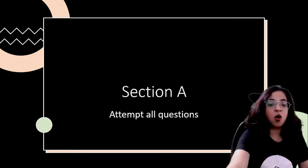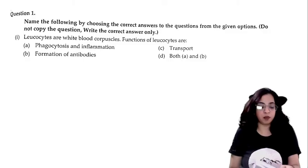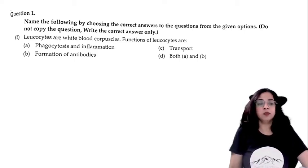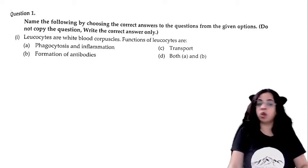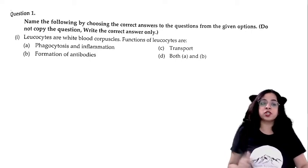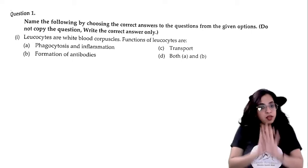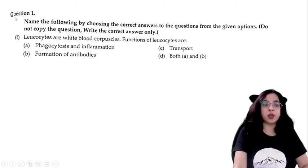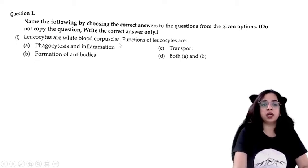Section A — all questions are compulsory. Name the following by choosing the correct answer from the given options. Do not copy the question; write the correct answers only. Just write the question number outside the margin — for example, question 1.1 — and then write the option inside the margin. That format is enough. Leukocytes are white blood corpuscles. The functions of leukocytes are: phagocytosis and inflammation, or formation of antibodies, or transport, or both A and B?